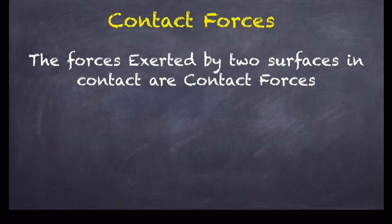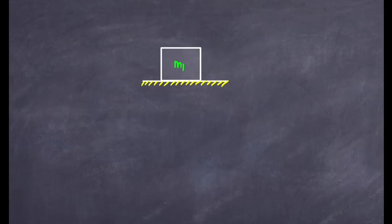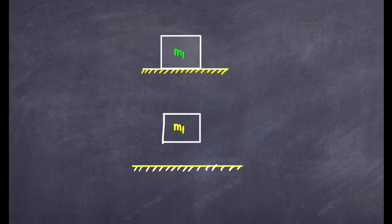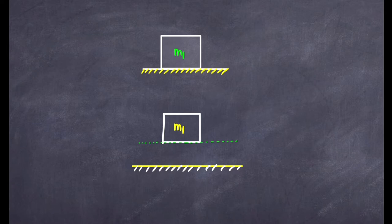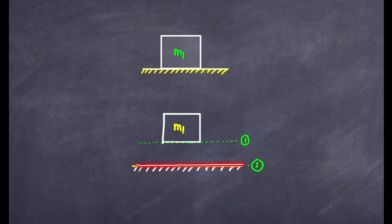What are contact forces? Forces that are exerted by two surfaces in contact are contact forces. In this figure, we have a box of mass m1 sitting on the ground. The lowermost surface of the block of mass m1 is in contact with the uppermost surface of the ground. Because the block is sitting on the ground, we can establish that surface 1 and surface 2 are in contact.